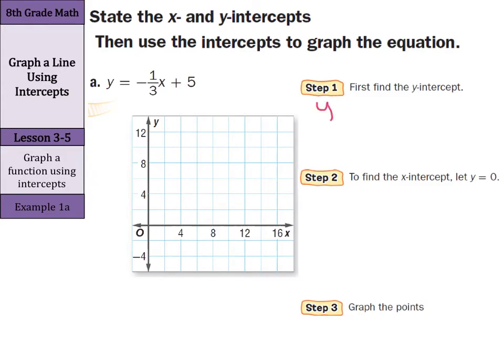Well, our equation y equals negative 1 third x plus 5 is already in the y equals mx plus b form, where b is our y-intercept. So, our y-intercept is simply 5.